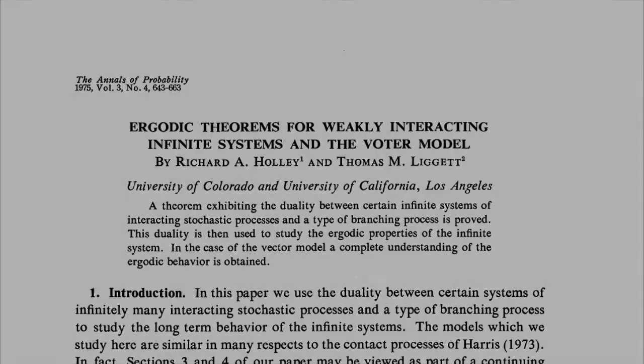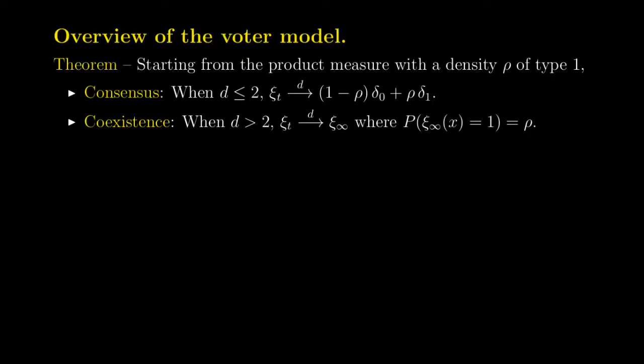More precisely, their result says the following. If we start from the product measure with density rho — meaning each individual is of type 1 with probability rho and of type 0 with probability 1 minus rho, independently — then in one and two dimensions we have what we can call consensus. We have convergence in distribution to the convex combination with weights 1 minus rho and rho of the two Dirac measures delta_0 and delta_1.